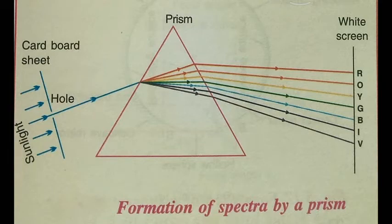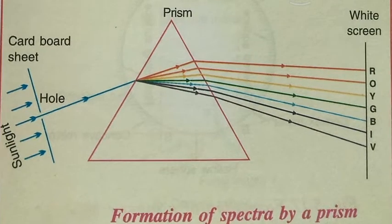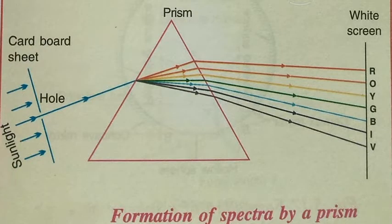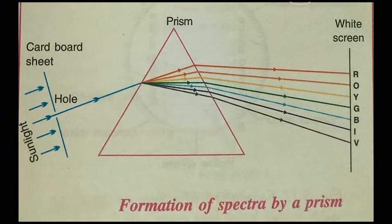As you can see in this picture, sunlight or white light is being incident on the prism, which after entering the prism splits into seven different colors. And very clearly, we see that it is violet light which deviates the most and red light that deviates the least.